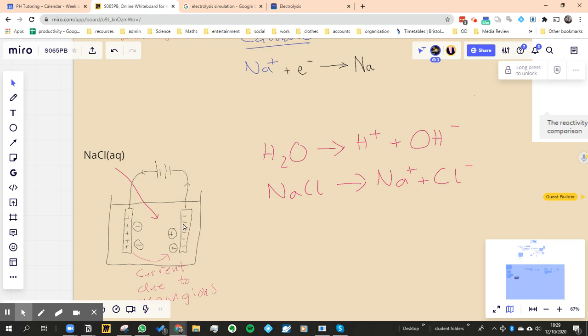So at the negative electrode, the cathode, we could have hydrogen going there, or we could have sodium going there. They're both positively charged, so which one would it be? Then at the positive electrode, we could have either of these two. They're both negatively charged,